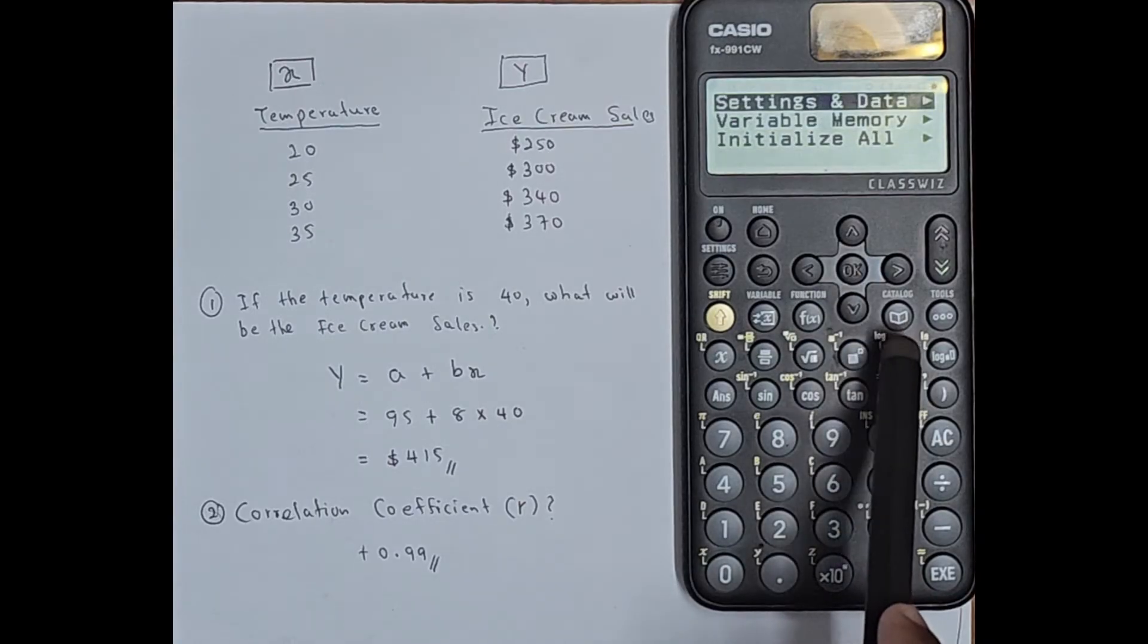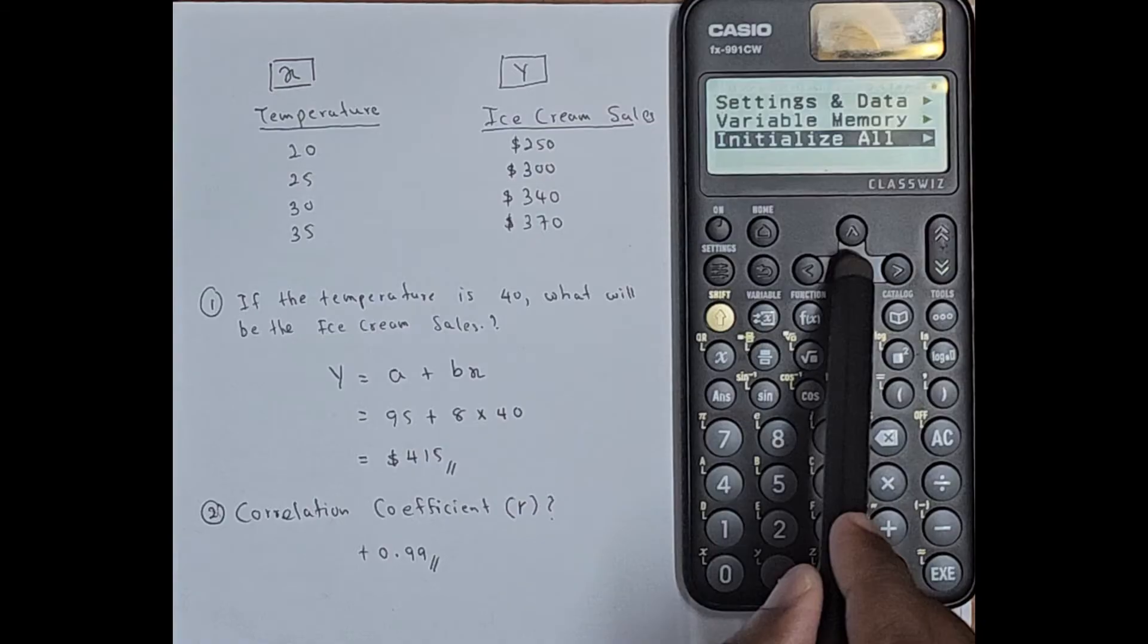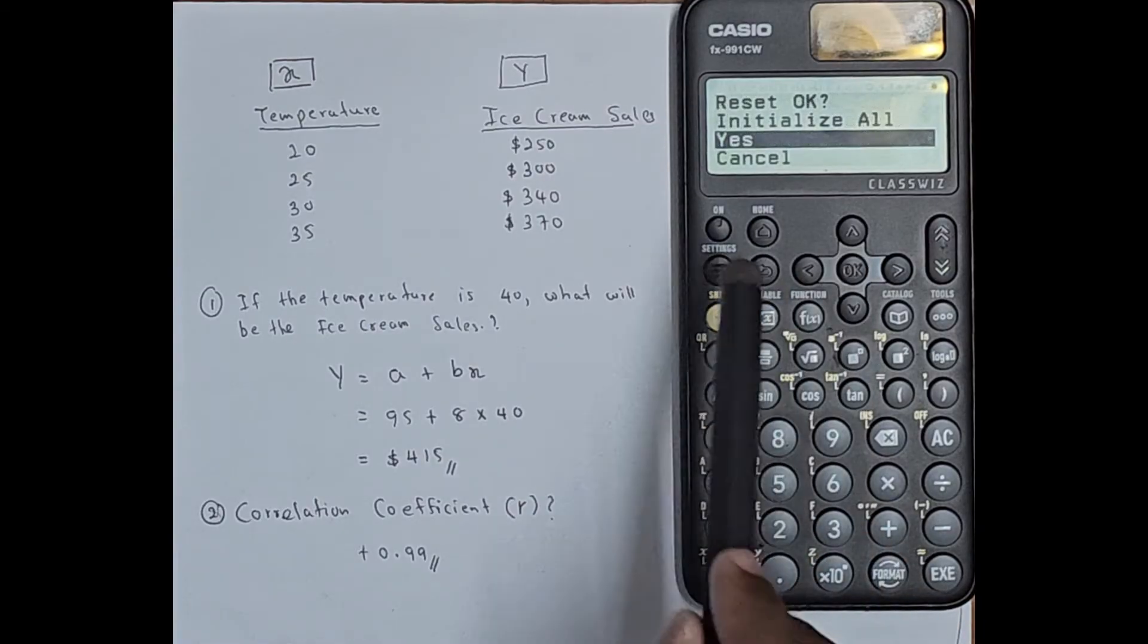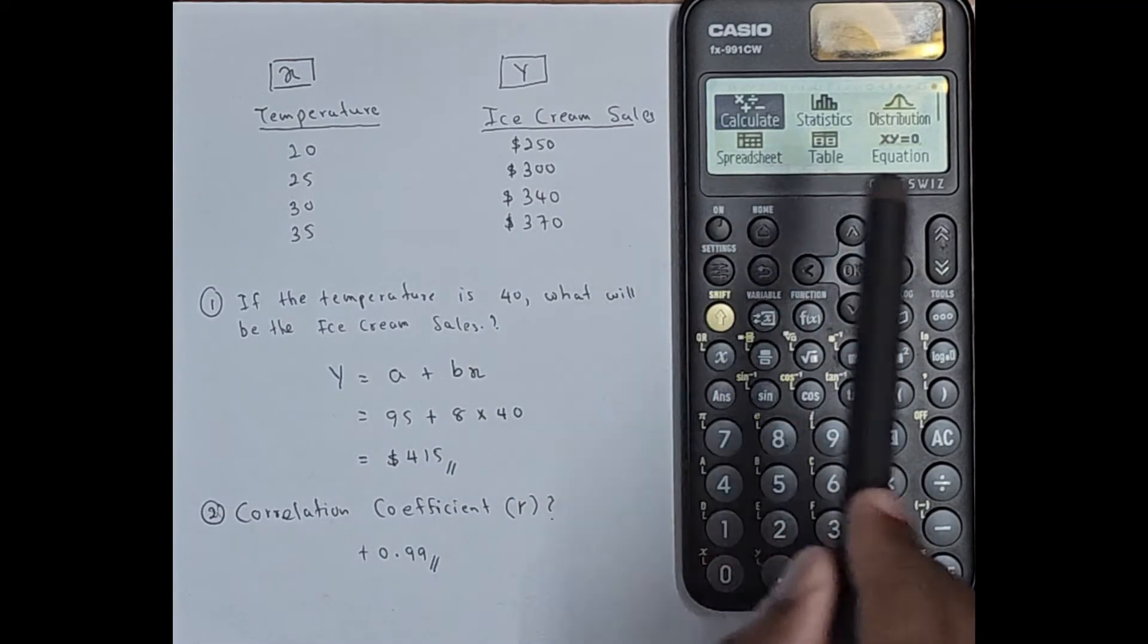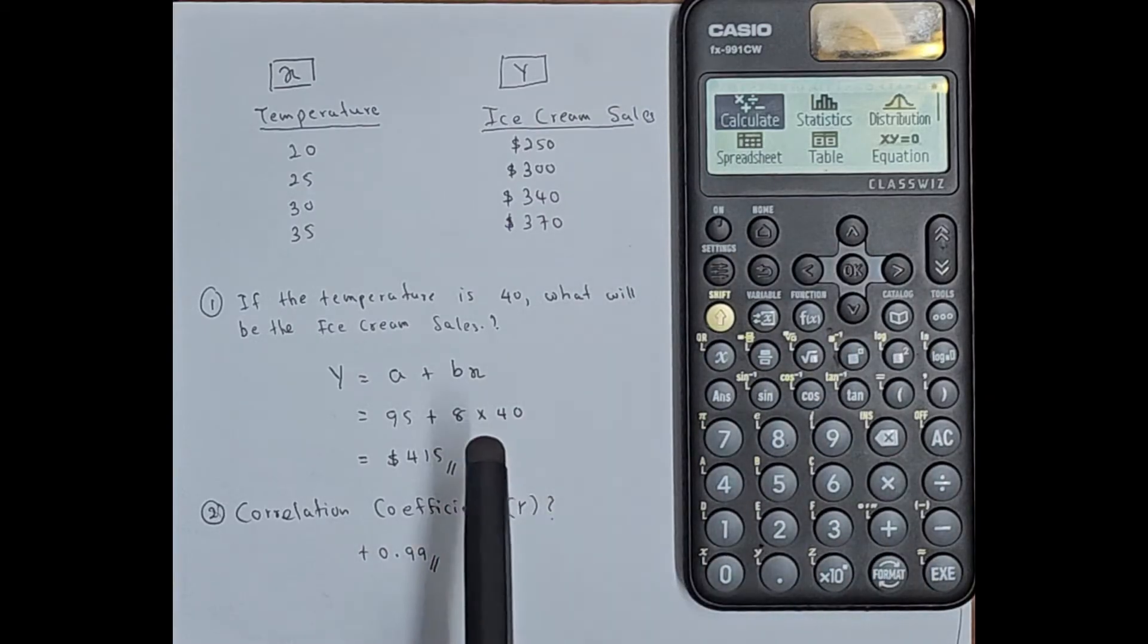After that you can see initialize all. Click that, then press ok. Then you can give yes. So now everything is cleared from the calculator.